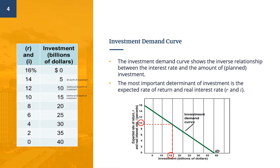Let's take a look at an example. Assume that this is total demand for investment goods by the entire business sector. Also assume that every firm has estimated the expected rates of return from all investment projects and has recorded that data. The investment demand curve is constructed by arraying all potential investment projects in descending order of their expected rates of return. The curve of the investment demand curve slopes downward, reflecting a negative or inverse relationship between the real interest rate and the quantity of investment demanded.